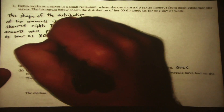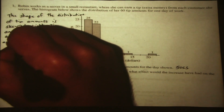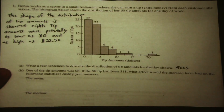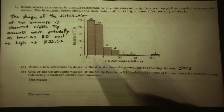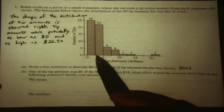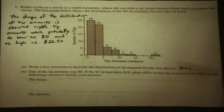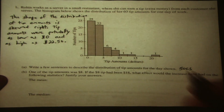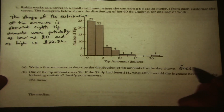Tip amounts were potentially as low as $0 and as high as $22.50. We don't actually know the minimum or maximum values here because it's anywhere from $0 to $2.50 in that first class, or anywhere from $20 to $22.50 in the last. But this sentence will adequately describe the spread from $0 to maybe $22.50. So we've done shape and spread.